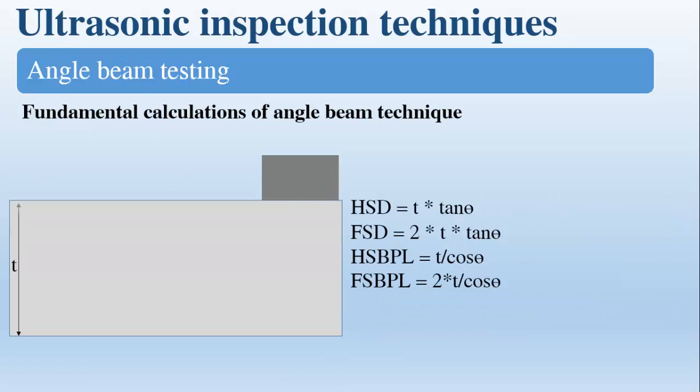So for the calculations, the half skip distance is equal to the thickness T multiplied by tangent of the angle of the probe theta.